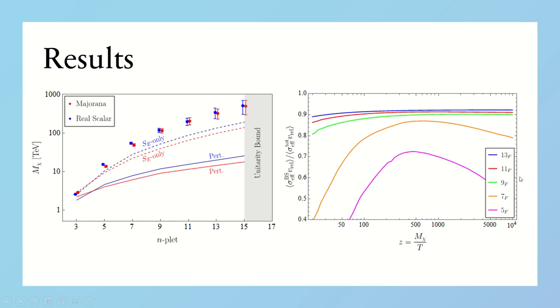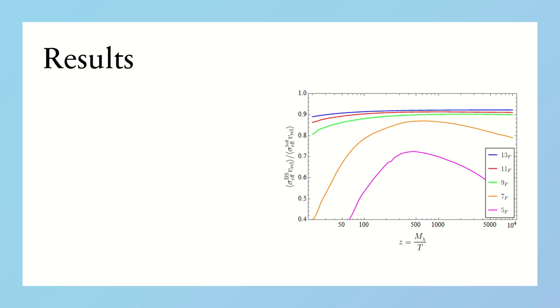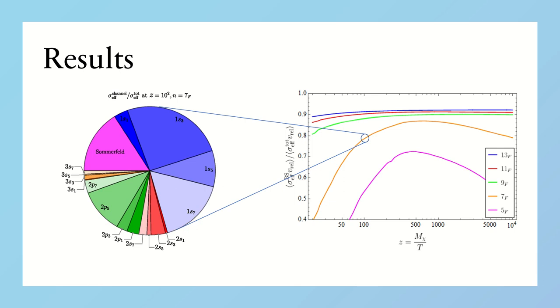Here we show, as a function of the dimensionality of the multiplet and temperature, the ratio between the contribution from bound state formation and the total annihilation cross-section. Besides, the most relevant bound states, as one can expect, are those sitting in the lowest-lying levels, as can be seen in this pie chart for the specific case of the fermionic 7-plet, where colors distinguish between energy levels and angular momenta, while the hue denotes the isospin of the bound state.